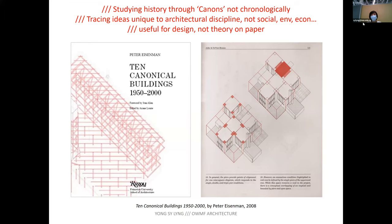You have to ask what ideas are affecting architecture. It's not social, not environmental, not economical — those are influences — but there are also ideas that directly affect the outcome of architectural design. We are looking at this as a theory for design: ideas useful for design and not just on paper.